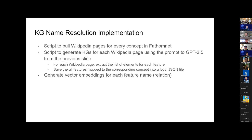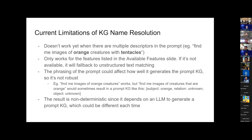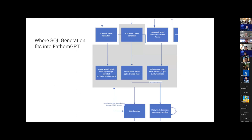The implementation uses various scripts for knowledge graph generation. We pull Wikipedia pages, generate KGs for each page, save everything as a JSON file, and generate vector embeddings for feature names to map to the relations. Currently there are some limitations: it doesn't work if there are multiple descriptors like both colors and body parts together, or if it's not one of the available supported features. In those cases it falls back to unstructured text matching. Also, if the phrasing of the prompt causes the non-deterministic LLM to generate an incorrect knowledge graph, it may not find the correct answer. Those are areas we still need to improve.